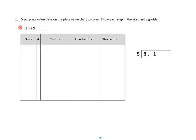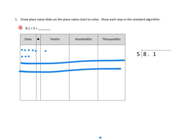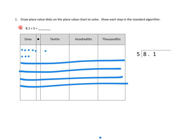8.1 is 8 ones and 1 tenth on the place value chart. Over here we've put our dividend, 8.1, underneath our division brace. We've also figured out our divisor is 5, and on our place value chart we're going to need to create 5 bars — 5 spots where we can divide out these dots equally.